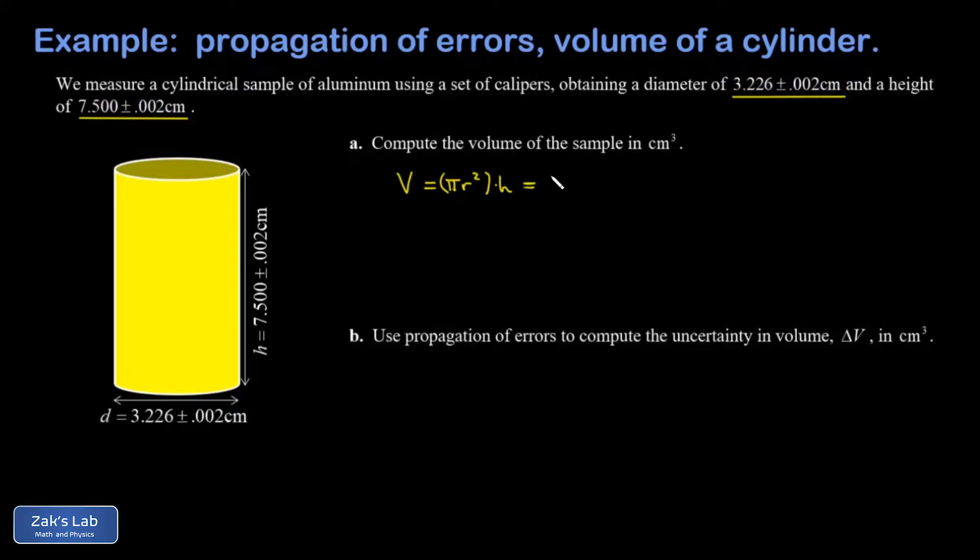One important point in this problem is that to deal with uncertainty properly we need to state the volume formula in terms of those things that were directly measured. So instead of writing a radius there, I'm going to write diameter divided by 2.